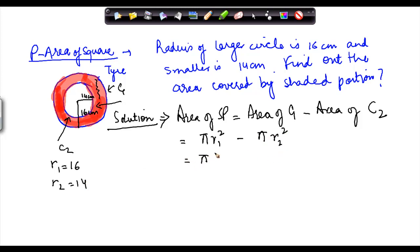You take pi as common between these two. So you are left with r1 square minus r2 square or 22 by 7 into 16 square minus 14 square.